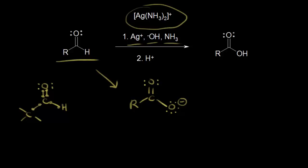One way to assign oxidation states is to think about differences in electronegativity. Oxygen is more electronegative than carbon, so we give all four electrons to oxygen. Carbon and carbon have the same electronegativity, so one carbon gets one electron each. Between carbon and hydrogen, carbon is more electronegative, so it takes those two electrons. Carbon has four valence electrons; here it is surrounded by three, so four minus three gives an oxidation state of plus one.